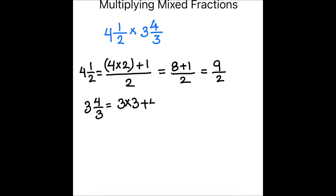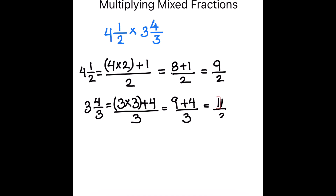Now let's convert three and four thirds into an improper fraction. That is three times three plus four, divided by three, which equals nine plus four divided by three. Nine plus four is thirteen — wait, nine plus four is thirteen divided by three. Now we have two improper fractions: four and one half equals nine over two, and three and four thirds equals thirteen over three.